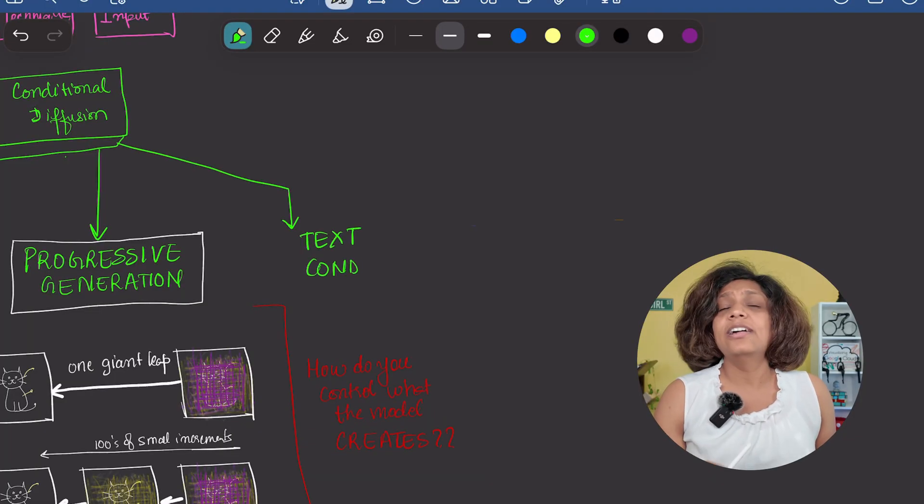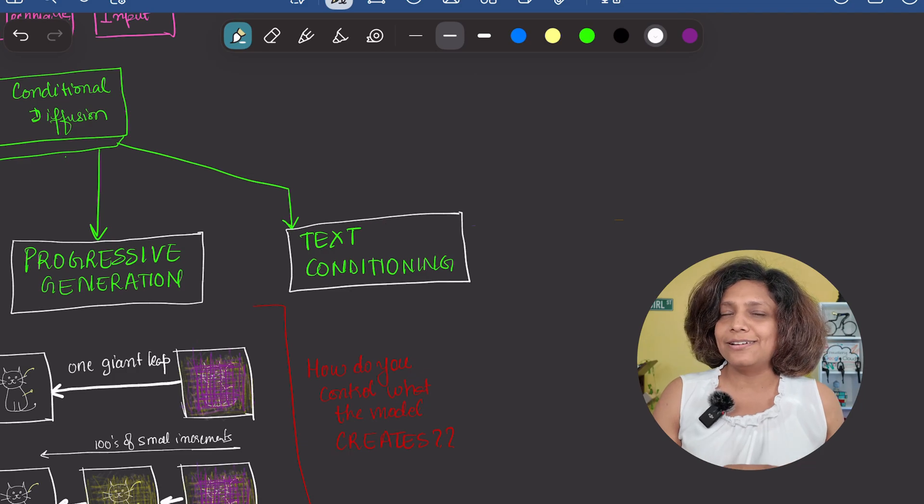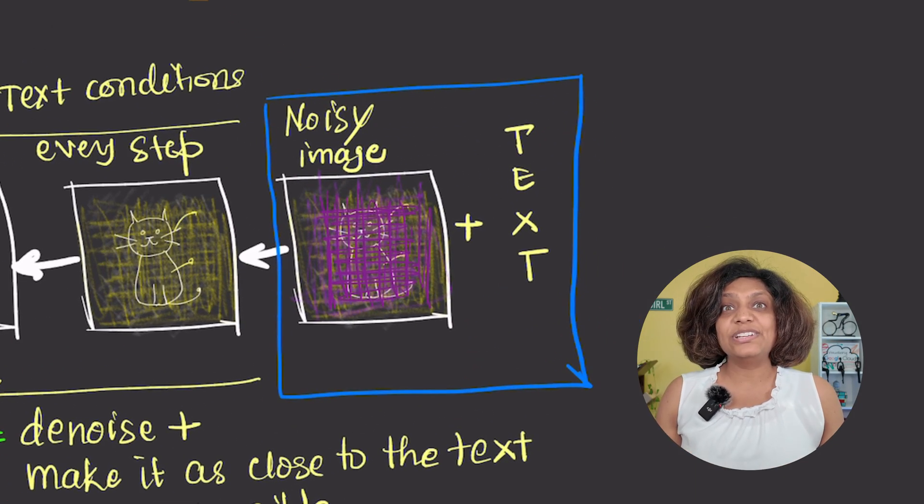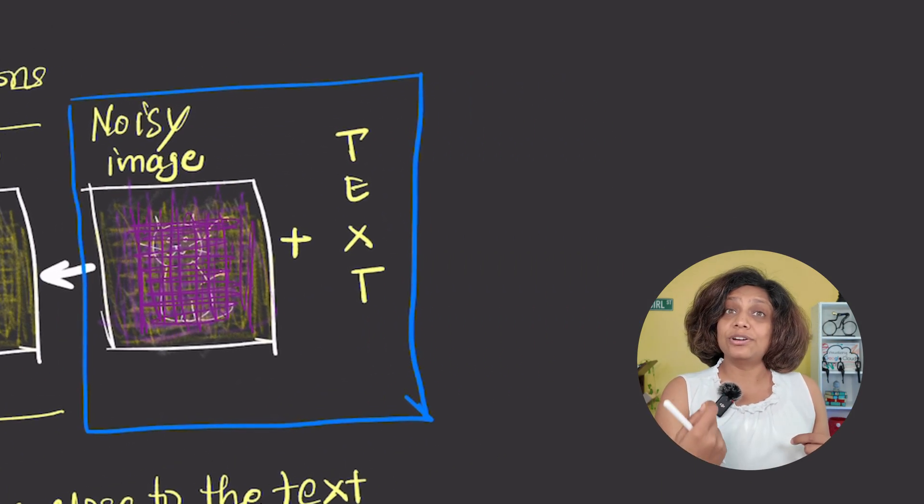That brings us to our next idea: text conditioning. Instead of just feeding the U-net a noisy image, we give it a second input, which is our text prompt. The text is converted into a numerical format that the model can understand.